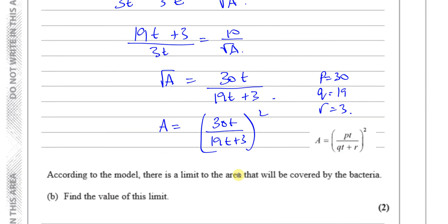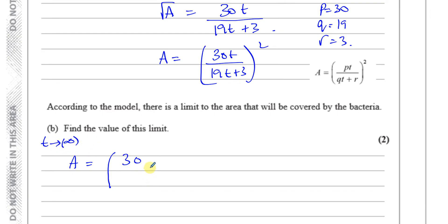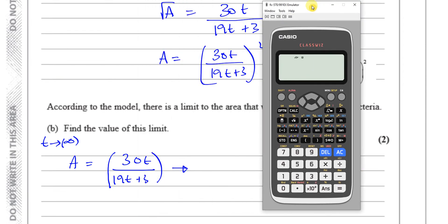Now for part b. It says: according to the model, there is a limit to the area that will be covered by the bacteria. Find the value of this limit. When you have a question like this, the simple way of dealing with it is to take a value of t that's really big — as t approaches infinity.